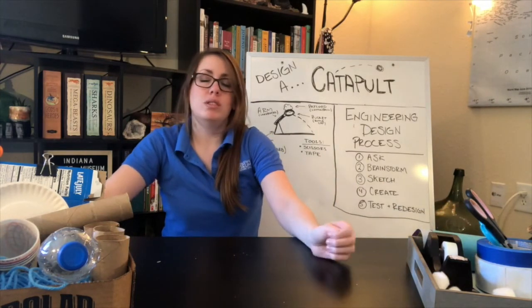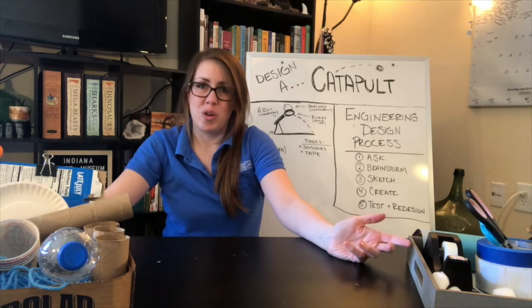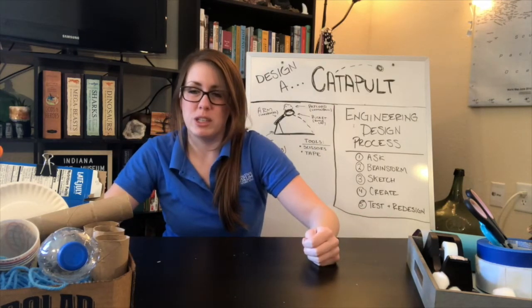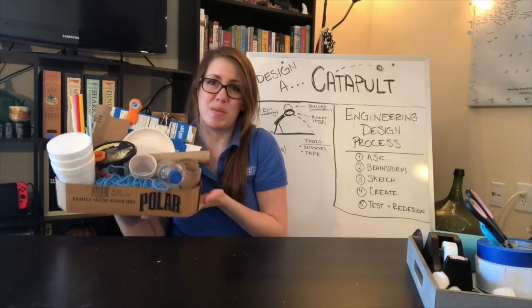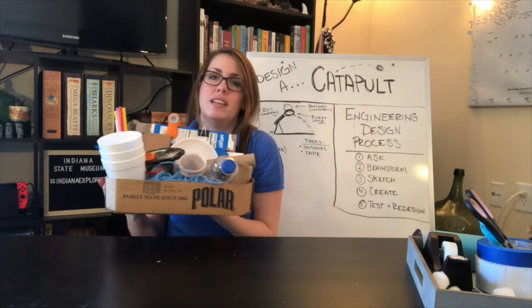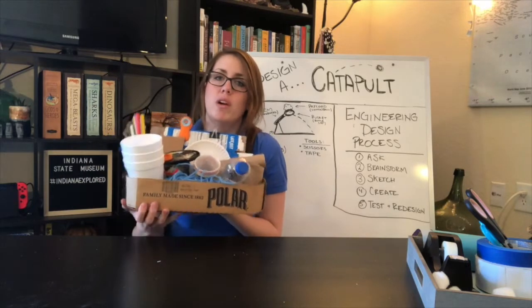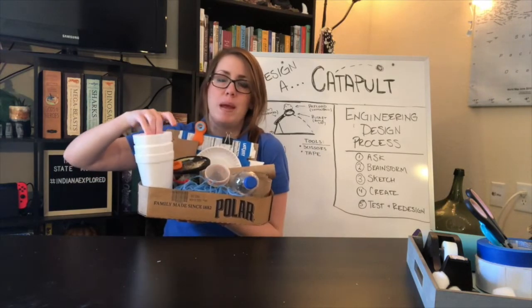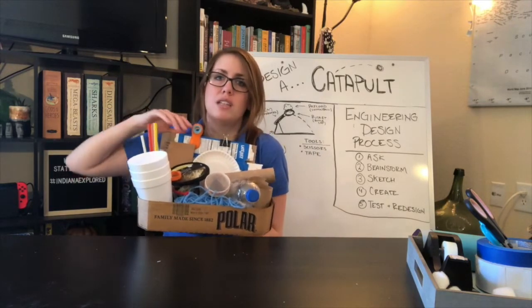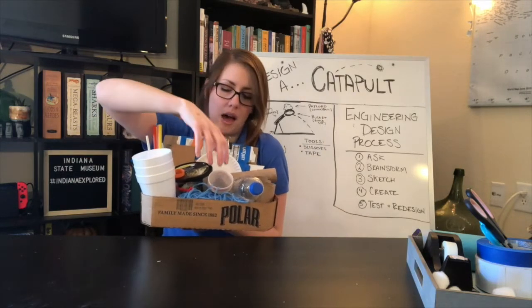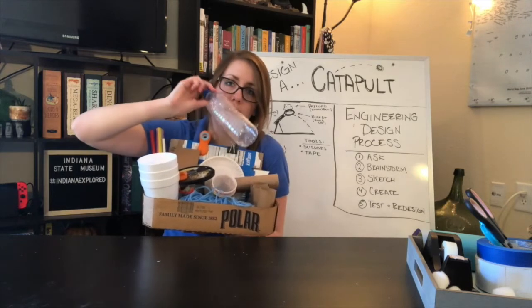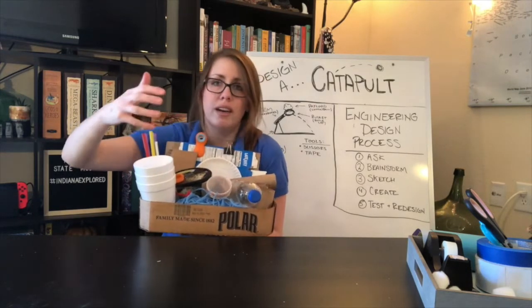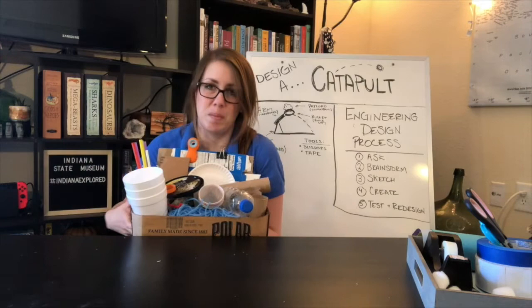And we also need to brainstorm about what kinds of objects we can use. Now I have a box right here of different kinds of supplies that I found around my house. So think about the things you can use. I have lots of cardboard, I have different size paper and plastic cups, straws, chip clips. Let's see, we've got popsicle sticks and recycled objects and string. All those kinds of things can help you build.